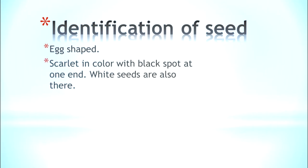First, identification of the seed. It is egg-shaped, scarlet in color, and has a black spot at one end. There are two types: one is scarlet in color and one is white in color. It is tasteless and odorless, so you won't be able to identify or smell it.